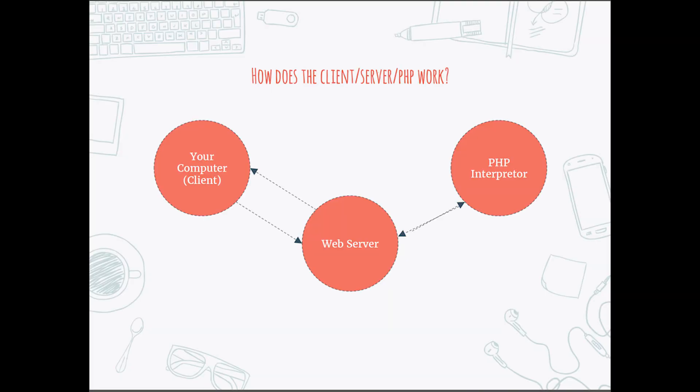So how does the client, server, and PHP work together? The client, which is your computer, sends a request via the URL. The web server — hosting server, whatever you want to call it — interprets the PHP and sends it back to the client as HTML.